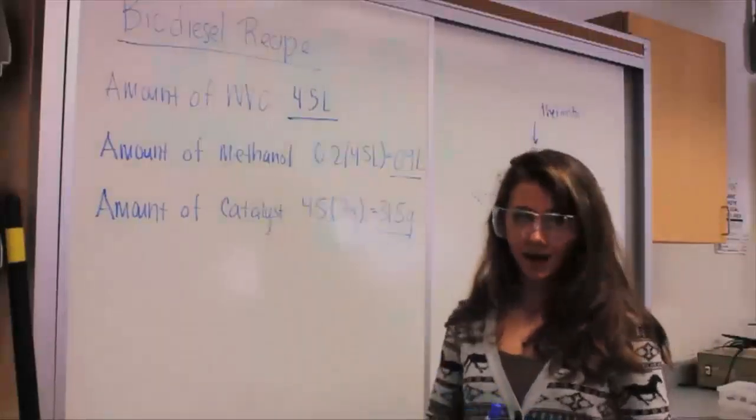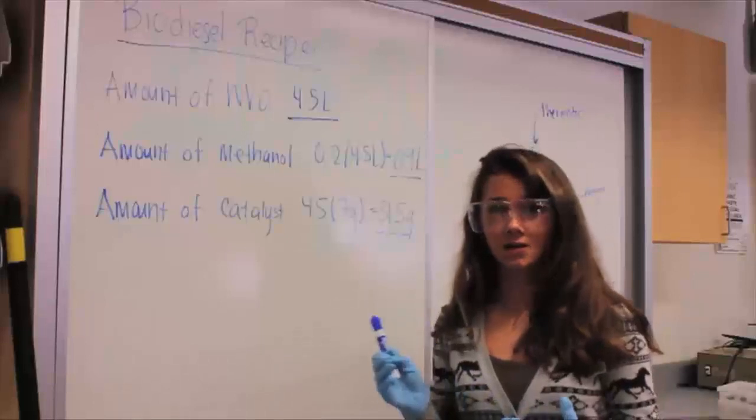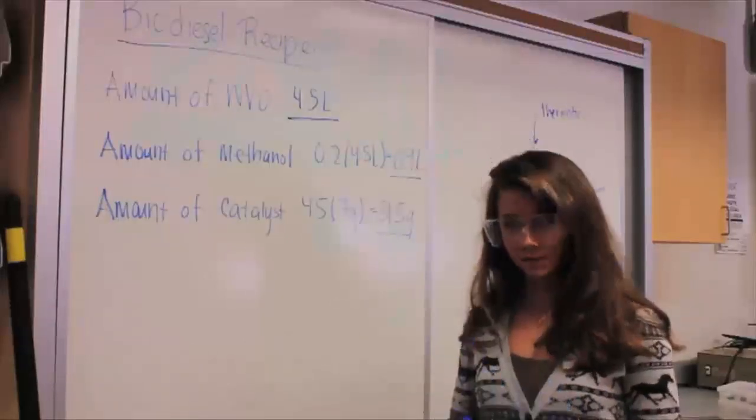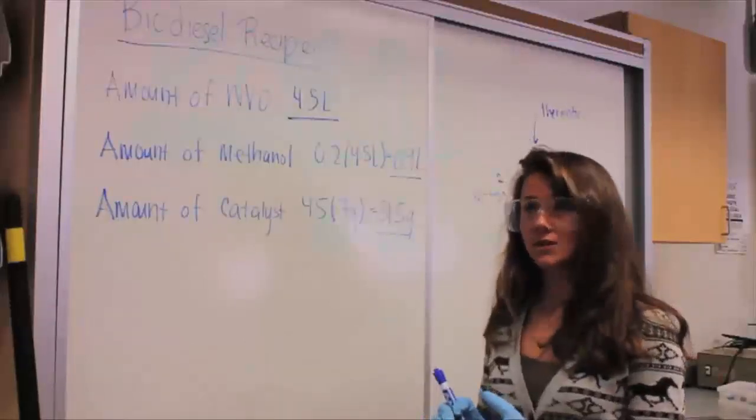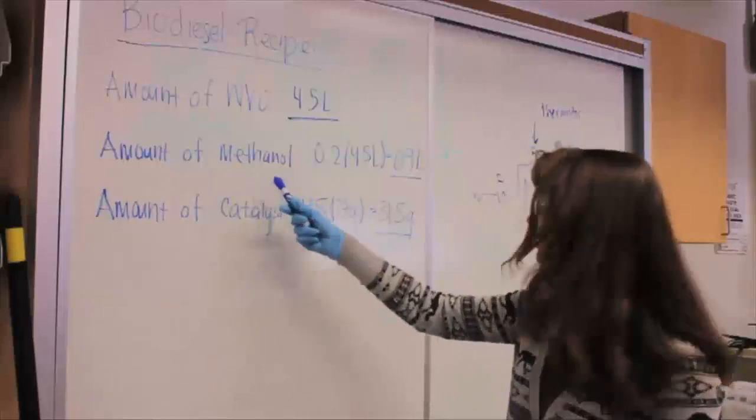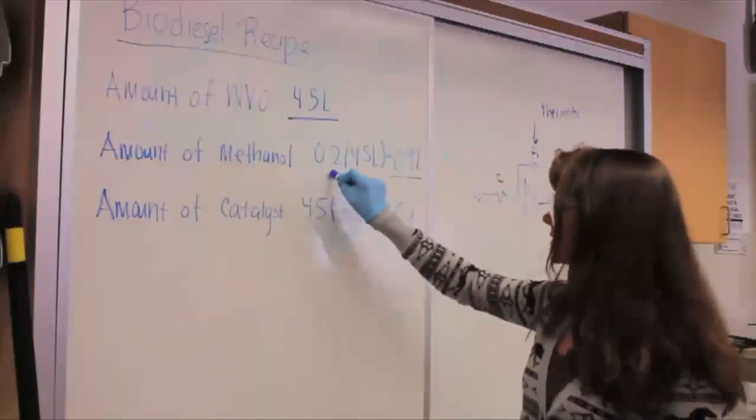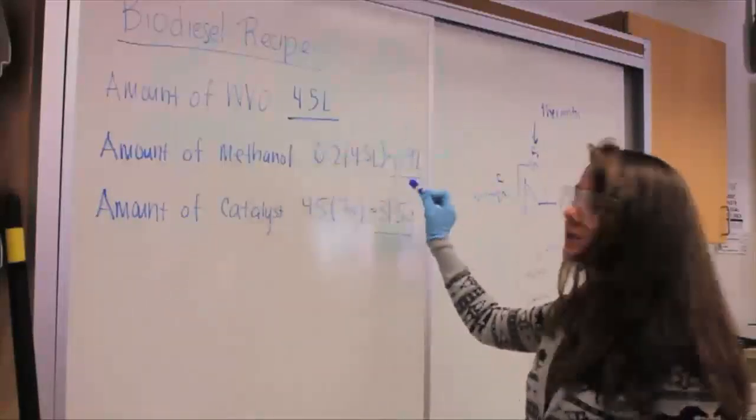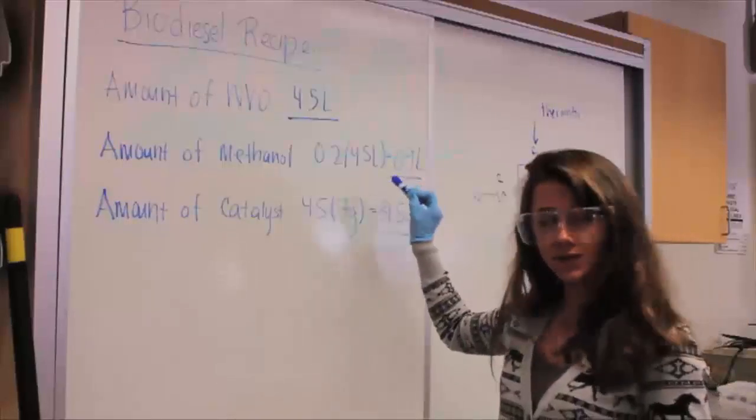You need to mix that with methanol and a catalyst in order for the reaction to happen. So you take 20% of the volume of the waste vegetable oil that you're using, and that's going to be your methanol. So we calculated this by saying 20% times the amount of waste vegetable oil. It was 0.9 liters, so we'll be using 0.9 liters of methanol.